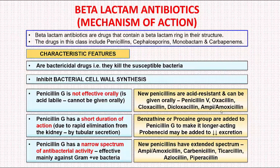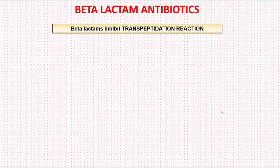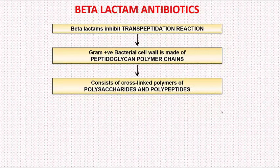Coming to the mechanism of action — how does penicillin, or any other beta-lactam, act? Beta-lactams inhibit bacterial cell wall synthesis. The basic action is that penicillin inhibits the transpeptidation reaction. The cell wall in gram-positive bacteria is made up of peptidoglycan polymer chains, consisting of cross-linked polymers of polysaccharides and polypeptides.